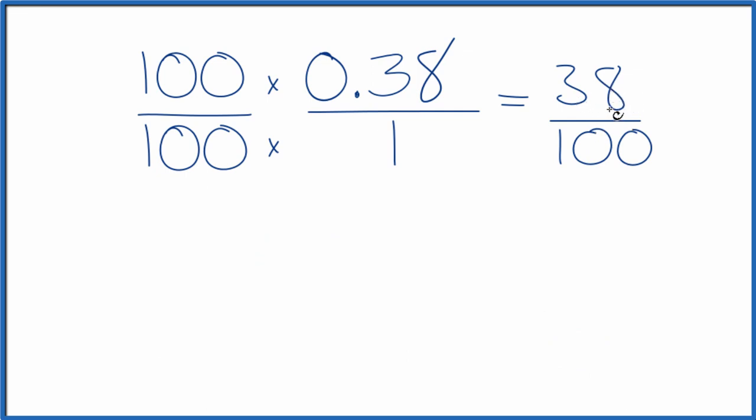38 divided by 2, that's 19. 100 divided by 2, that's 50. So we've simplified 38 over 100 down to 19 over 50.